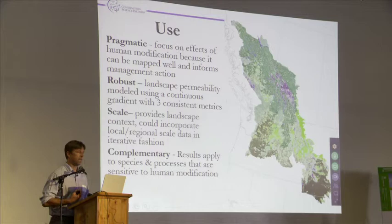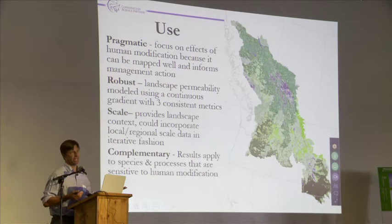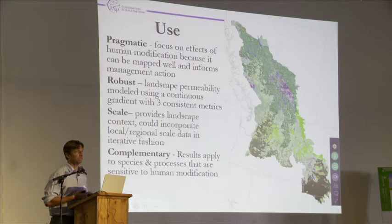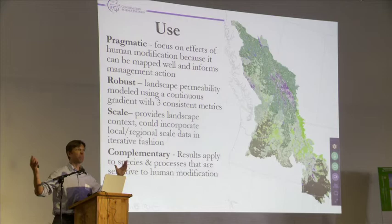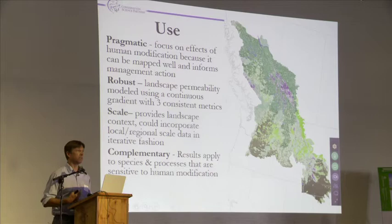It's robust because it looks at not just single pathways — it thinks of the world as a continuous gradient. It isn't a patch size greater than 5,000 acres just because that links to wilderness area. For this context, we wanted to think about the biology and ecology: bigger is better, presumably there are more species there, presumably more viable populations. In terms of scale, I'm trying to say: think big, think long-term. This provides a landscape context, and you can and should think about how to incorporate local and regional scale data into this in an iterative fashion. This is complementary.